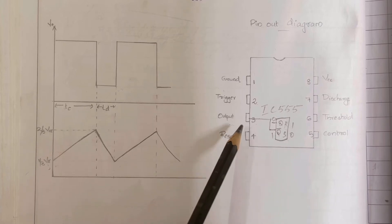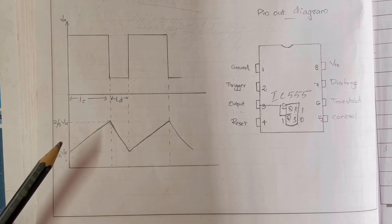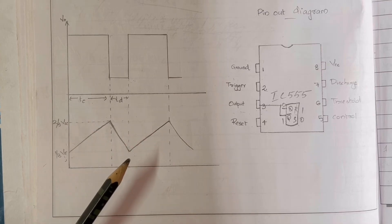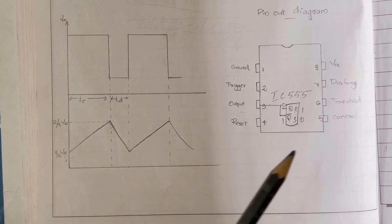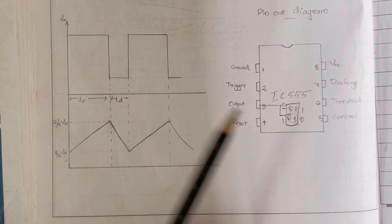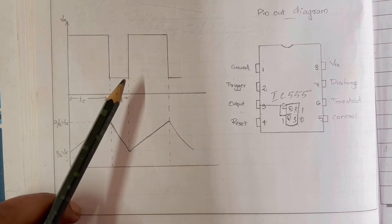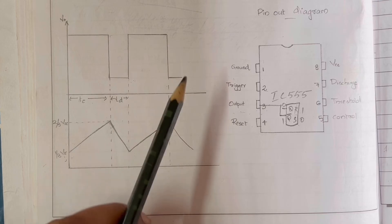When the voltage reaches two-thirds of VCC — the threshold value — the capacitor starts discharging. Then the flip-flop output becomes R = 0, S = 1, Q = 1, and Q-bar = 0. The output of the 555 then goes to a low level. These two states — high during charging and low during discharging — form a rectangular wave. The cycle repeats to form a continuous rectangular wave.